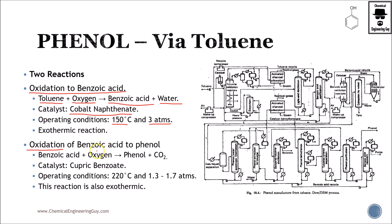Benzoic acid is then going to be converted to phenol via oxygenation — further oxidation of the benzoic acid to phenol and CO₂. This is done via a cupric benzoate catalyst at very high temperatures and moderate pressures.